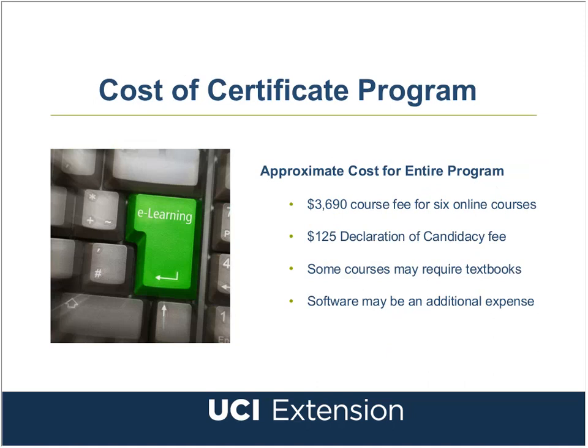Each course costs $615, so the total for six online courses is $3,690. You don't pay the entire total up front — you simply pay for each course individually at the time of enrollment. There is also a $125 certificate candidacy fee, bringing the total for the entire certificate program to $3,815. Please note that amount does not include textbooks, which some courses may require. Textbook information is posted on the enrollment page so you'll know before enrolling. Prior to enrollment in the practicum, students must purchase or otherwise have access to an authoring tool such as Articulate Studio, Storyline, Adobe Captivate, or other, so software fees may be an additional expense.